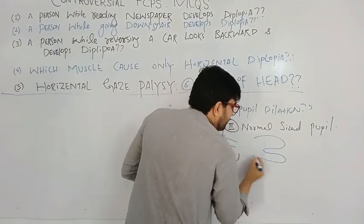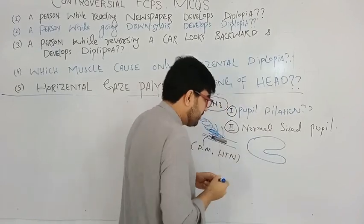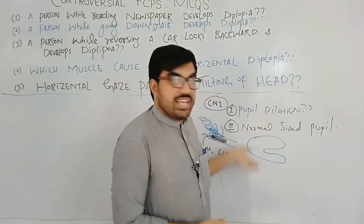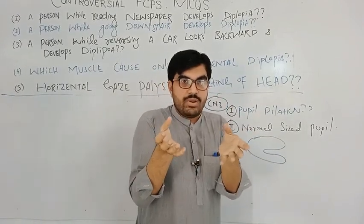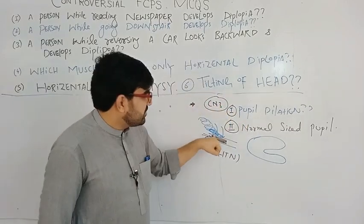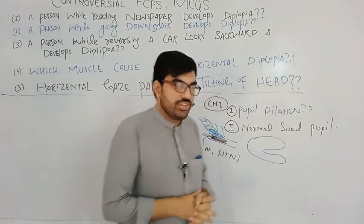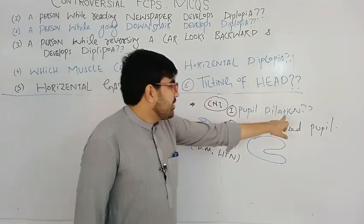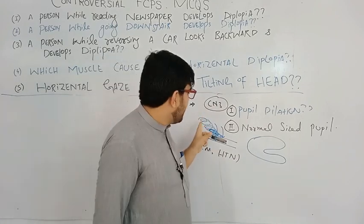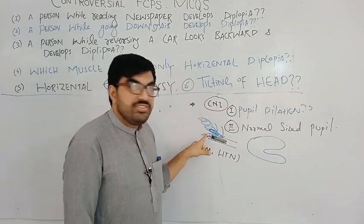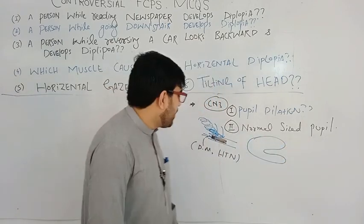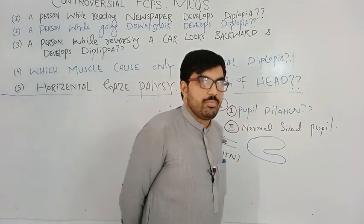When there is raised intracranial pressure, the brain herniates downward and impinges on the third nerve — this is the differentiating point. If a person has pupil dilatation, think of something inside the brain impinging from outside. If the patient has a normal-sized pupil with an eye looking outward and downward, the classic examples are diabetes mellitus and hypertension, because the pupillary fibers are relatively spared in these conditions.